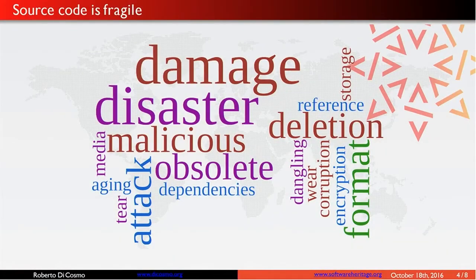Software and our precious source code is fragile. Like all digital information, it can be deleted, corrupted, misplaced, or lost. Human errors — who has never hit rm -rf in their own directory? And there are disk crashes, natural disasters, fire, we all think about that. But more recently, we have seen malicious attacks, people destroying a platform.